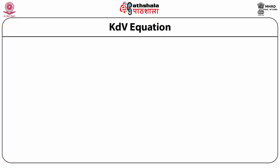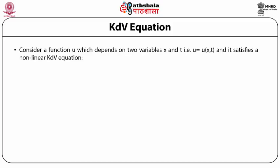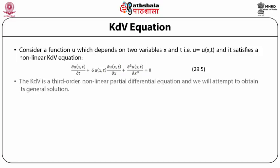We will now consider a nonlinear wave equation which exhibits soliton solutions. The equation is well known as the Korteweg-de Vries (KdV) equation. Consider a function u depending on two variables x and t, satisfying the nonlinear KdV equation: ∂u/∂t + 6u·(∂u/∂x) + ∂³u/∂x³ = 0. The KdV is a third-order nonlinear partial differential equation and we will attempt to obtain its general solution.